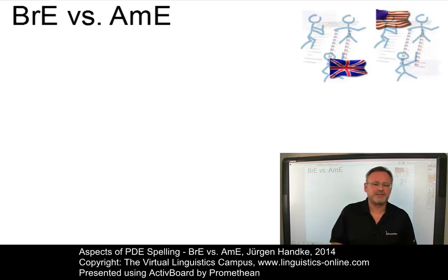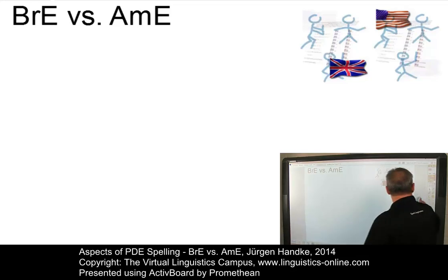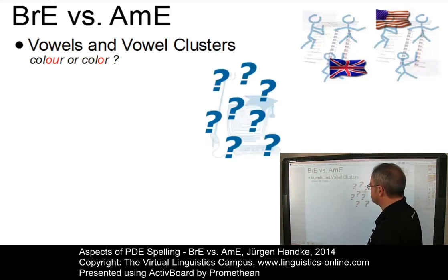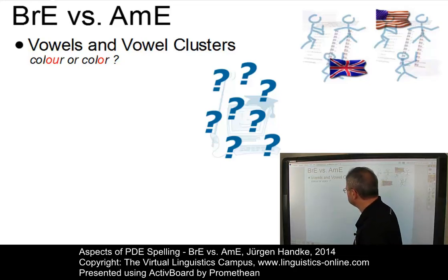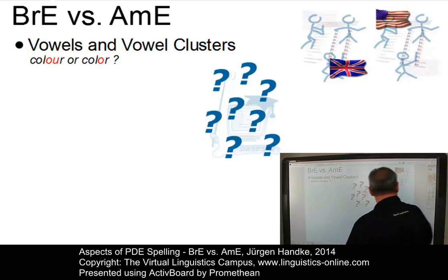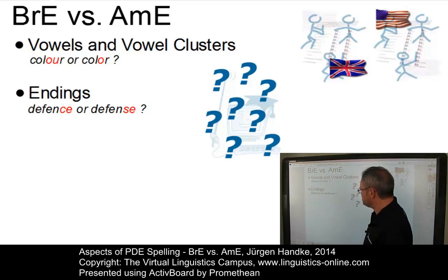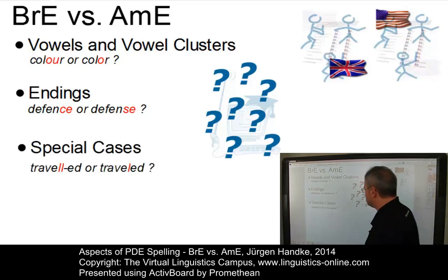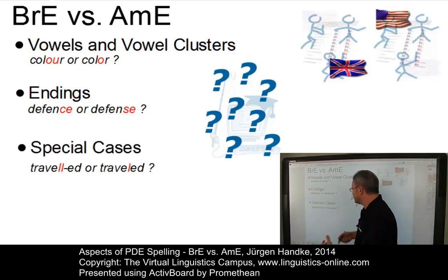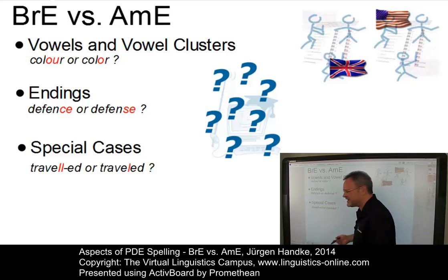We can subdivide the major differences between British English and American English into three groups. There are vowel clusters such as OU, or simple vowels such as O — so do we spell 'colour' with OU or just with an O? We have endings such as CE vs. SE in 'defence'. And we have special cases where sometimes we are not sure — do we have to double a consonant such as double L in 'travelled', or just one L?